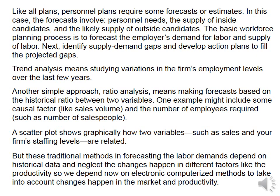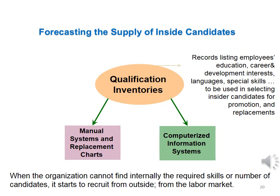We also have the scatter plot, which shows the relationship between two variables graphically. These traditional methods depend on historical data and neglect changes in factors like productivity, so we now use electronic methods that take into consideration different levels of productivity and different scenarios of sales volume. Each organization has to keep a qualifications inventory — done manually for small organizations and computerized in large ones — recording employees' education, career and development interests, languages, and special skills, to be used in selecting insider candidates for promotions and replacements.